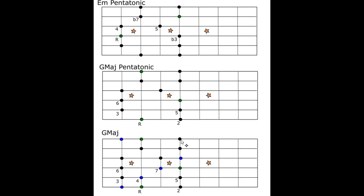This is a handy way to learn the major scale. We can go root, two, three, four, five, six, seven, root, two, three, four, five, six, seven, root. And if we start at root and go back one fret, we get the seventh — so we can also go root, seven, six, five, four, three, two, root. Sometimes you might even think about starting the scale on the seventh, although it may not sound as good.